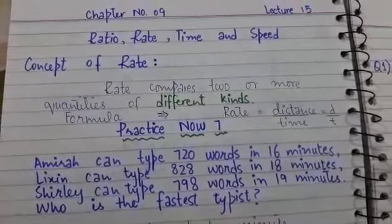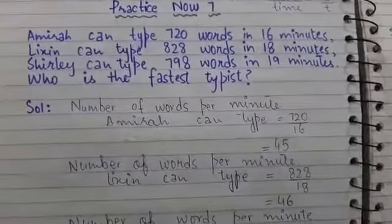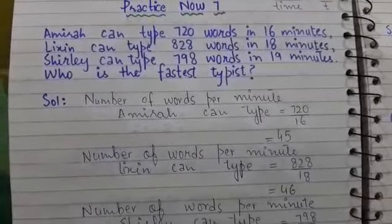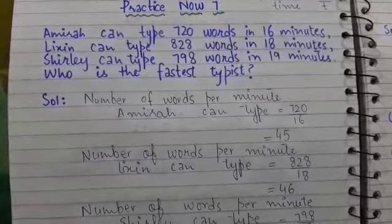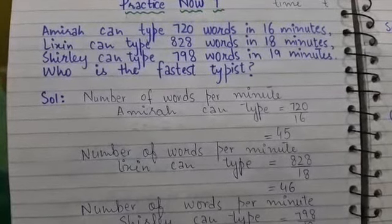We will understand this concept with the help of some examples. Practice Now 7: Amira can type 720 words in 16 minutes. Lixen can type 828 words in 18 minutes. Shirley can type 798 words in 19 minutes. Who is the fastest typist?